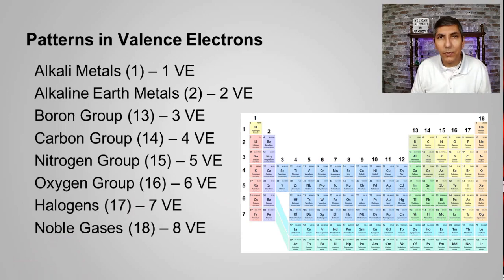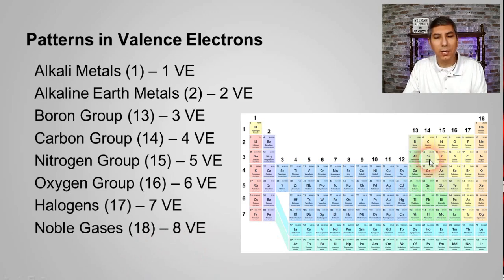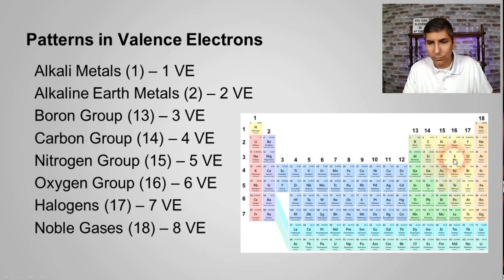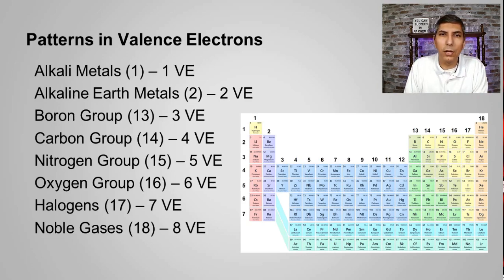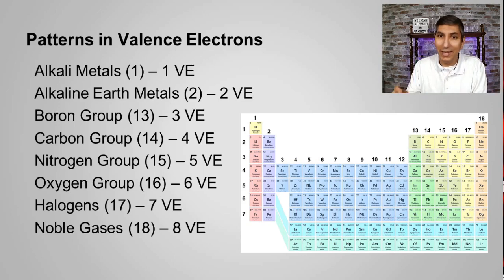Hopefully you can look at the periodic table for any of the representative elements and tell just by looking at where it is how many valence electrons it has. For example, silicon is in group 14, so it has four valence electrons. Magnesium is in group 2, so it has two valence electrons. Sulfur is in group 16, so it has six valence electrons. You can predict this for any of the representative elements. I hope you learned something from this video. Please slam that thumbs up button and consider subscribing. Thank you for watching — I'm Jeremy Krug, this is the place for honors chemistry and AP chemistry. I hope to see you again in the next video.